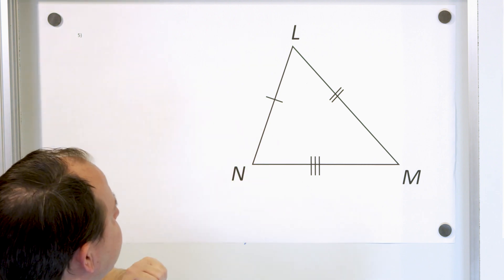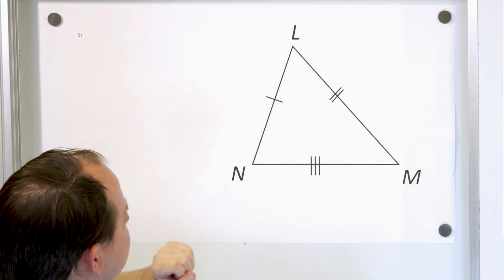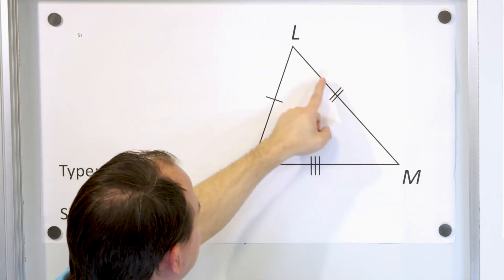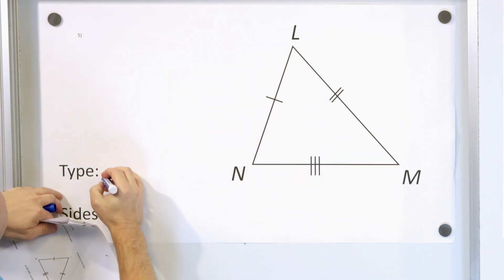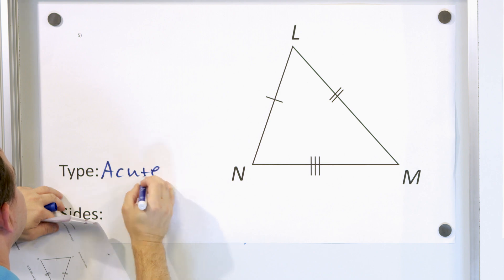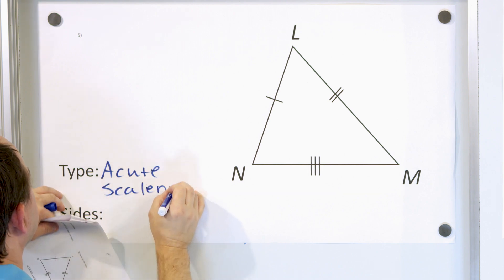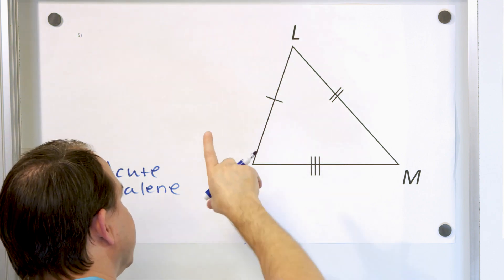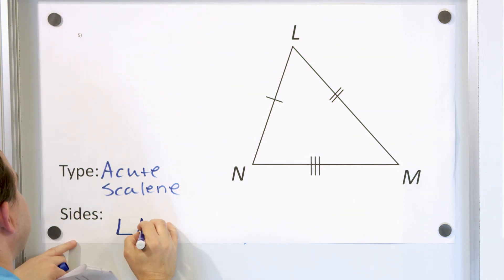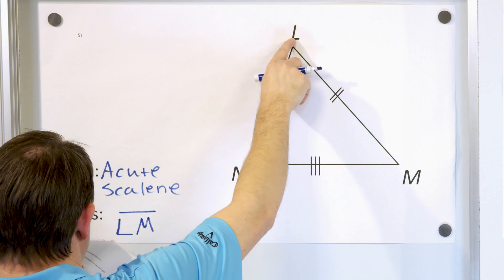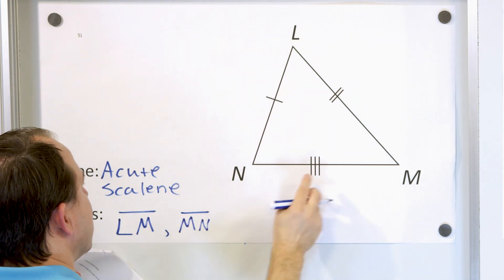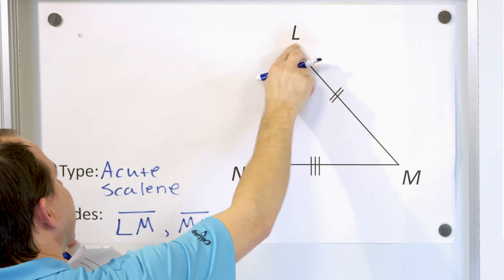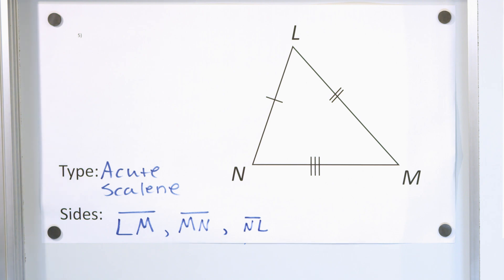Problem number five: this side is different from this one, which is different from that one — so it's a scalene triangle. All three angles are acute, making it an acute triangle. Together, we call it an acute scalene triangle. The sides are named: LM is this side, MN is this side, and NL is this side — just practicing writing the names of line segments.